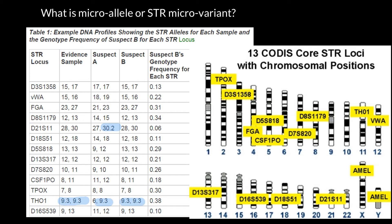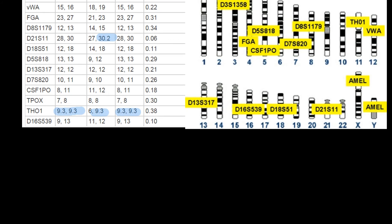Now we can talk about the microallele itself. From my previous videos you already know that all these numbers represent the number of repeats. But what does a decimal number stand for? For this particular locus, Th01, the core sequence of the repeat is A, A, T, G.